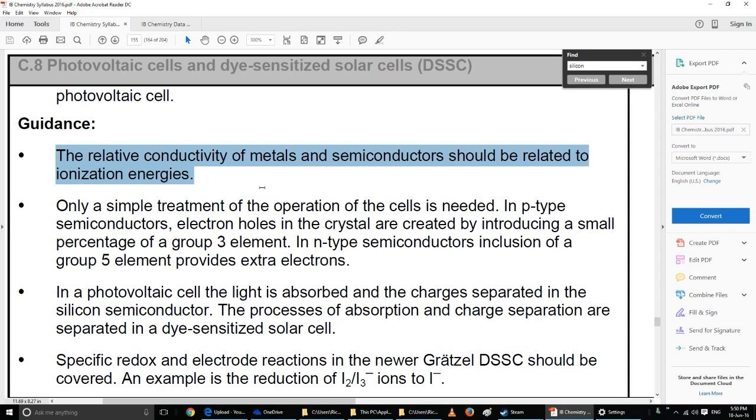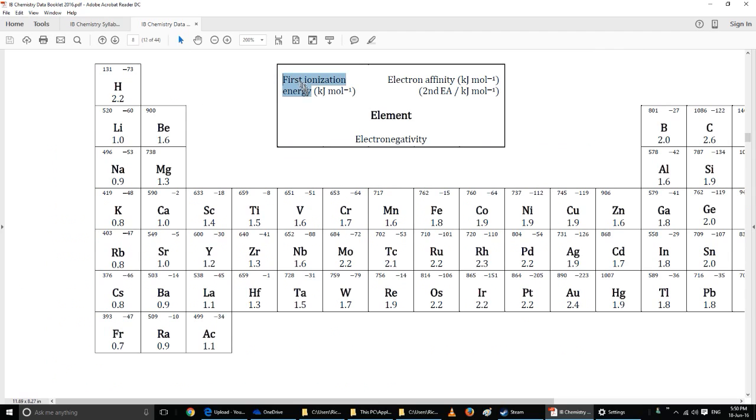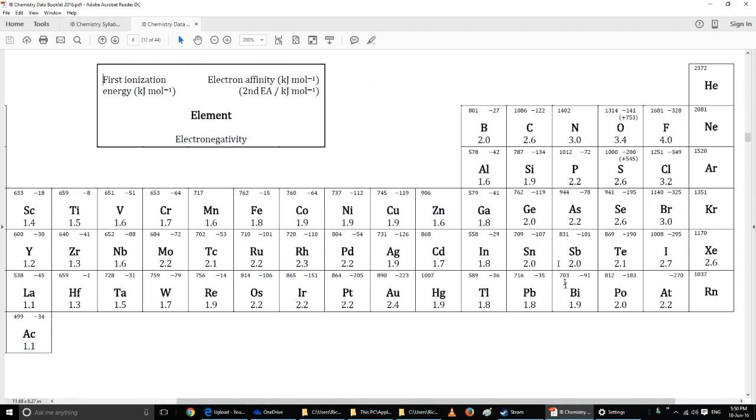The relative conductivity of metals and semiconductors should be related to ionization energies. And the first ionization energy, well I can look that up on the old data booklet copyright IB. Group one has the lowest first ionization energy. It's easiest to remove an electron from group one and as you go across it's harder and harder to remove an electron from the valence shell. More and more energy is needed.